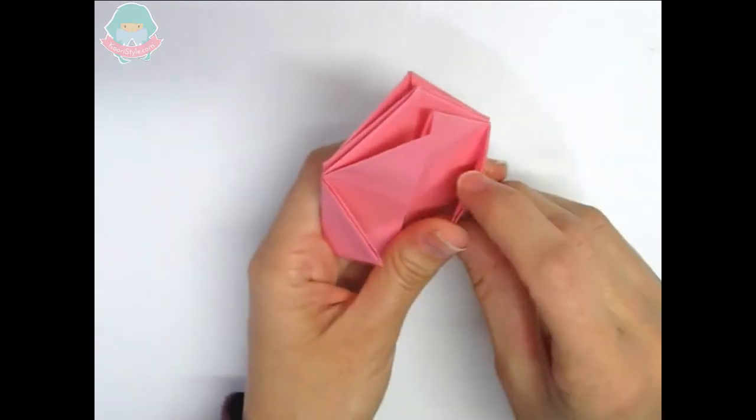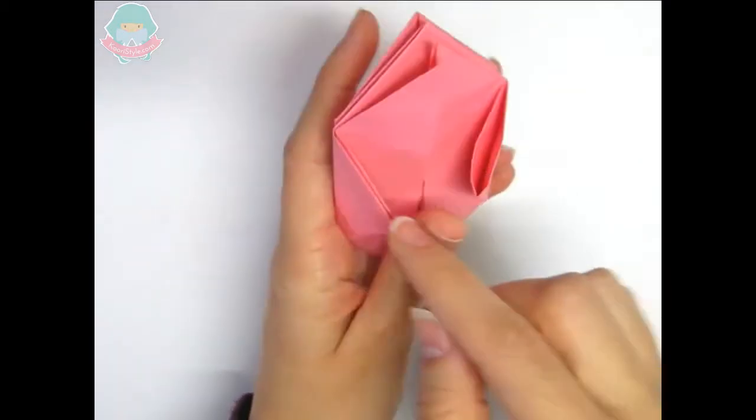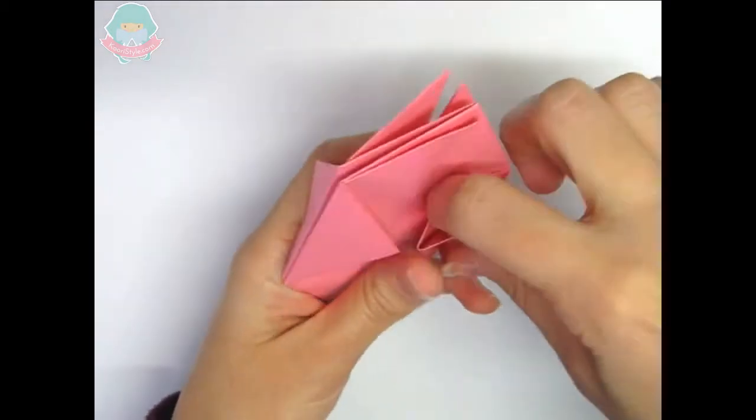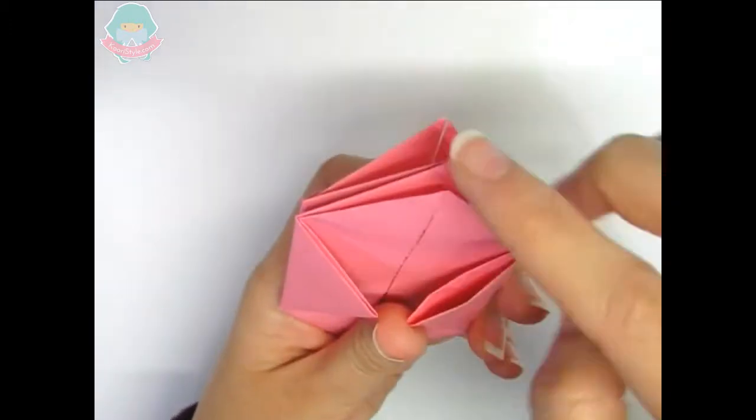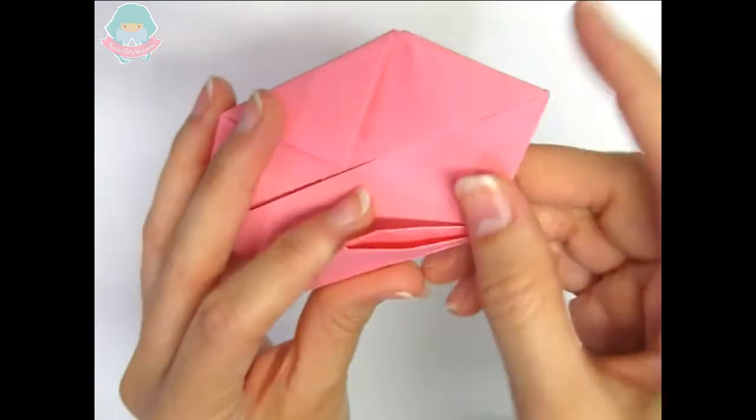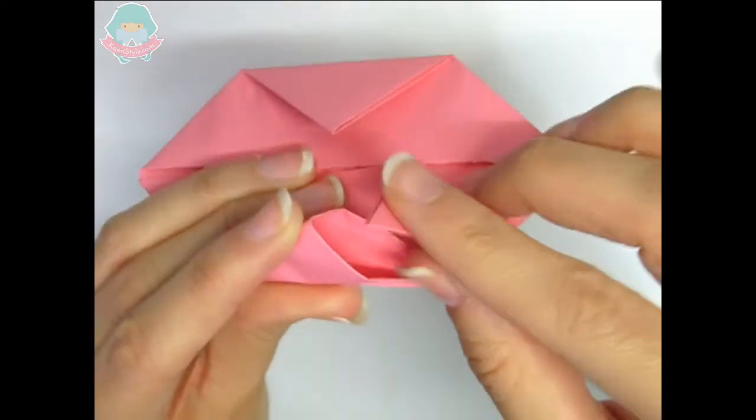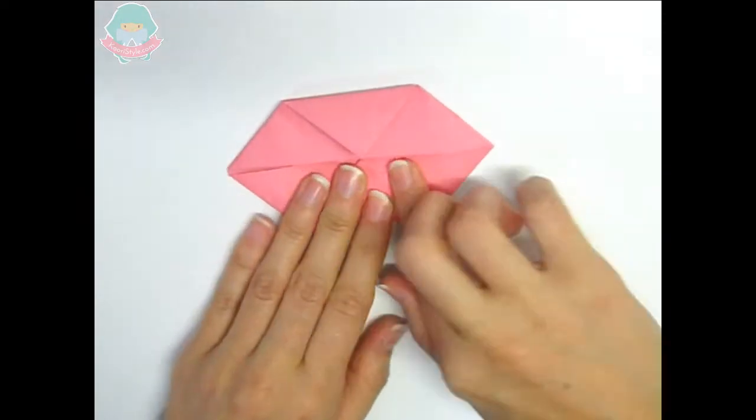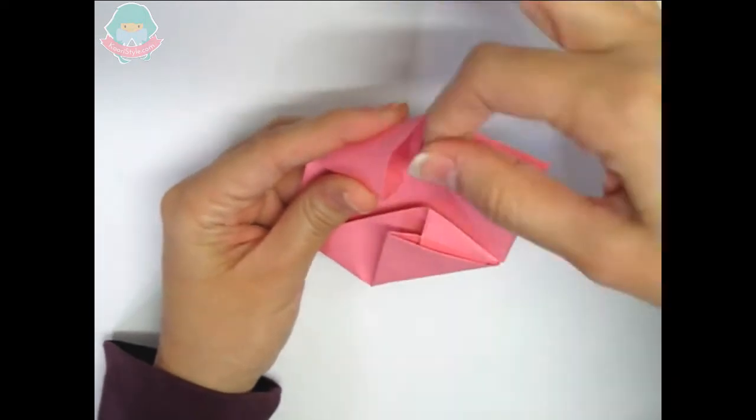As you can see, there is a little space inside every corner we just folded. It's like a little bag. Inside these little bags we are going to put the corners that are above them.